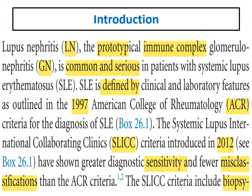Lupus nephritis, as we all know, is an immune complex disease and is considered one of the autoimmune disorders. Autoimmune disorders mean that the body or the immune system will form antibodies against self-antigens. In a normal population, our immune system usually doesn't attack its own tissues, but in autoimmune disorders there are autoantibodies against self-antigens. Lupus nephritis is considered one of the most common prototypes for immune complex-mediated glomerulonephritis, and it is common and serious.